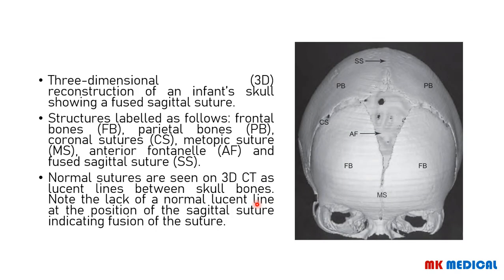Here's an image of a three-dimensional CT taken with a multi-slice scanner — an infant skull that was reconstructed. Different parts are labeled: FB = frontal bones, PB = parietal bones, CS = coronal suture, metopic suture, AF = anterior fontanel, and the sagittal suture. Notice how the sagittal suture has fused at the posterior aspect. Normal sutures on 3D CT appear as lucent, darker lines between skull bones, but here the sagittal suture shows premature fusion.